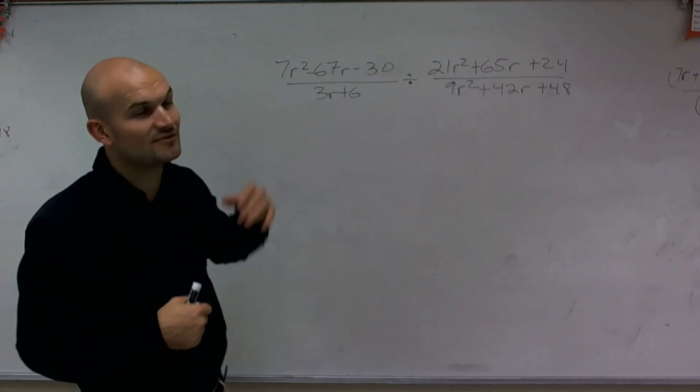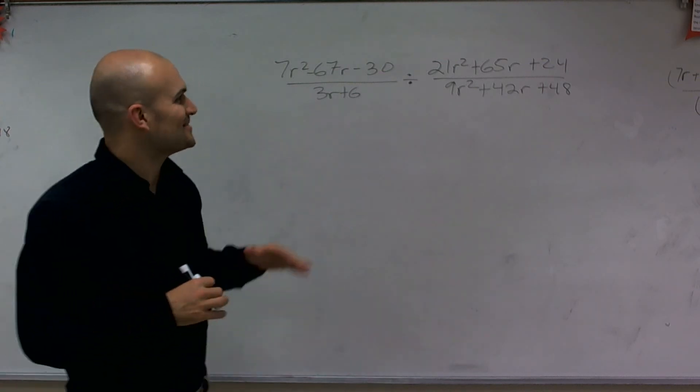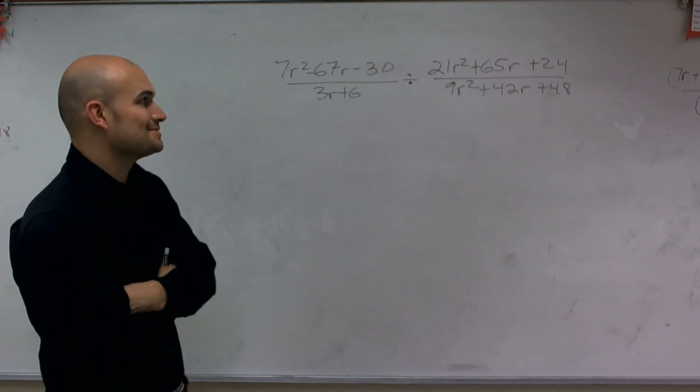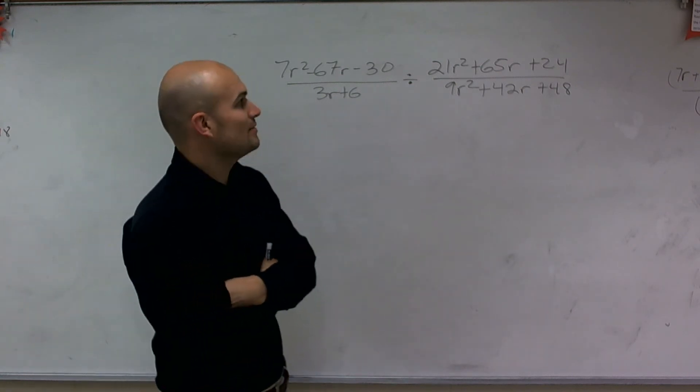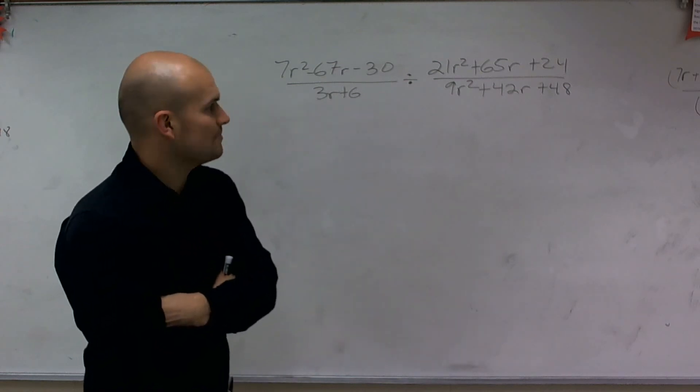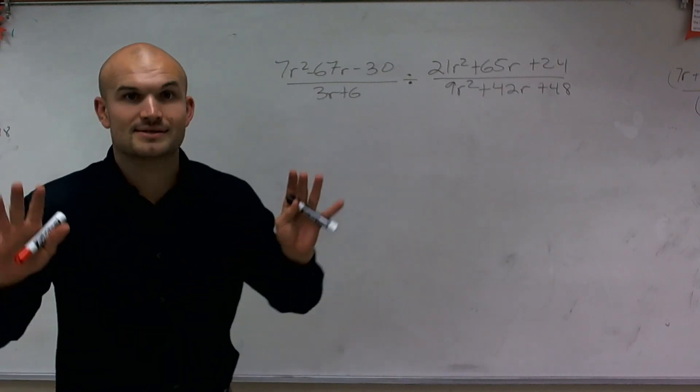What I want to do is show you how to simplify this lovely rational expression. So what we have here is 7r squared minus 67r minus 30 divided by 3r plus 6, divided by 21r squared plus 65r plus 24, divided by 9r squared plus 42r plus 48.